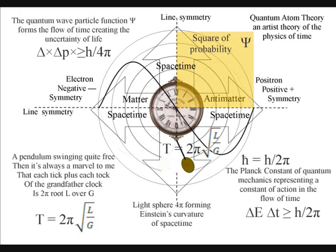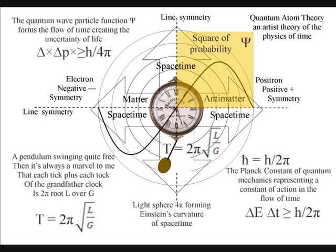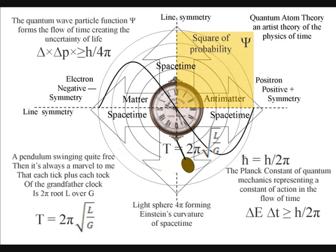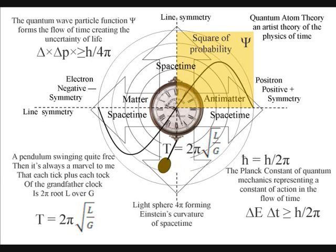Almost everywhere else in this diagram, we see 2 pi. The reason for this is that equations with 2 pi have cylindrical symmetry, a form of line symmetry.